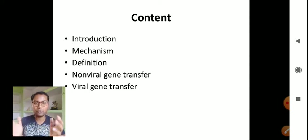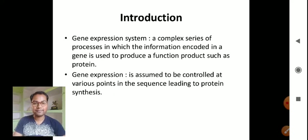Gene expression system is a complex series of processes in which the information encoded in a gene is used to produce a functional product such as protein. Gene expression is assumed to be controlled at various points in the sequence leading to protein synthesis.